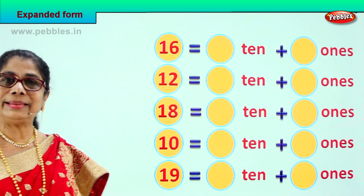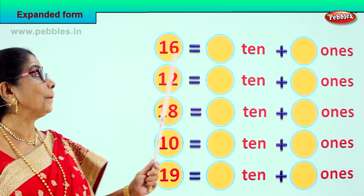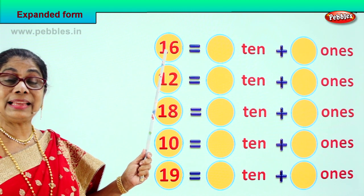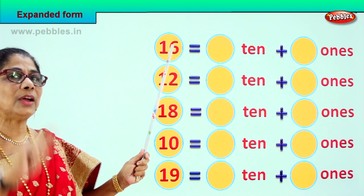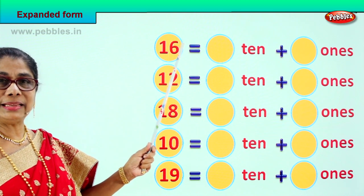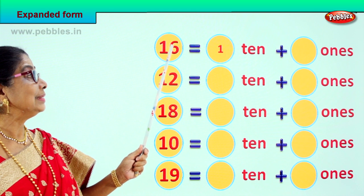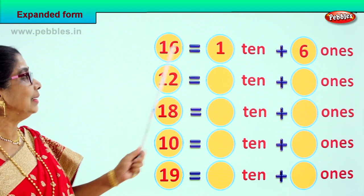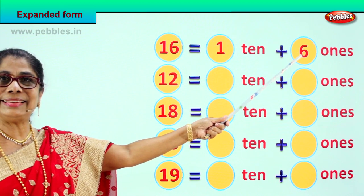How will you expand 16? How many tens are there? How many ones are there? That's how we expand. This is the ones place, this is the tens place. 1 ten and 6 ones. Excellent!